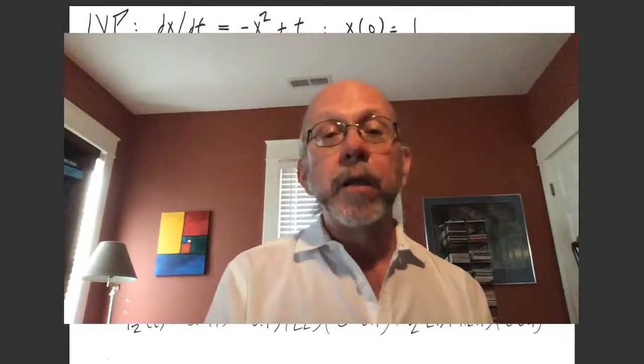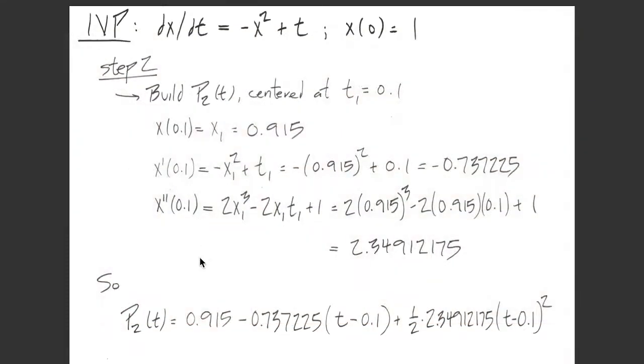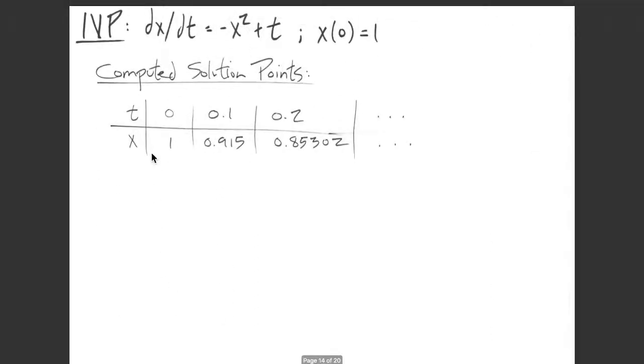You have to recompute the Taylor polynomial at each step because you want to recenter it at the last time value. Once you've got it, compute the new solution point: T₂ = 0.1 + 0.1 = 0.2, and x₂ = P₂(0.2) ≈ 0.853. The computed solution points so far are shown in the table.